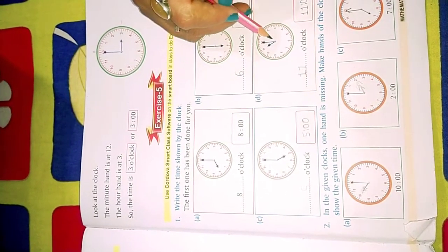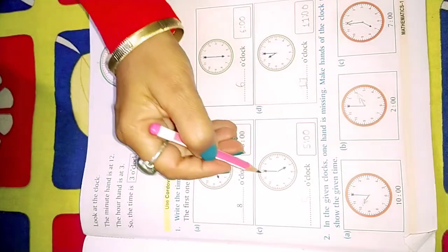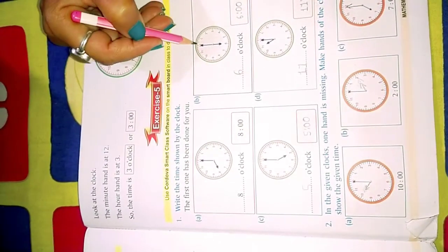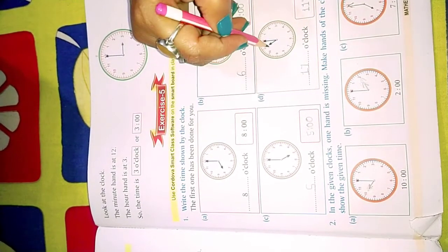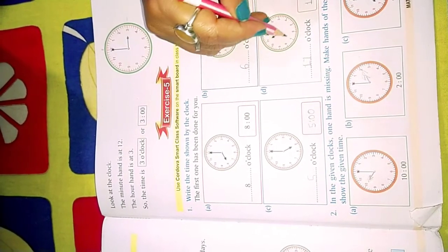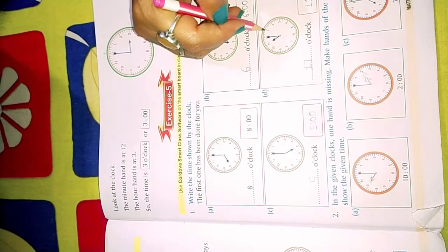Now hour hand is at 11 and the minute hand is always at 12 in all the clocks when it is telling the time. It is always on 12. Only the hour hand moves and it passes number-wise.